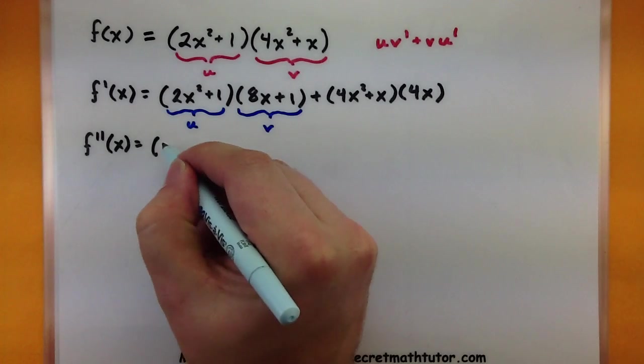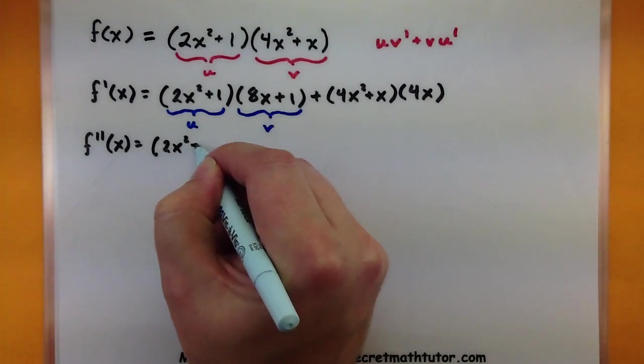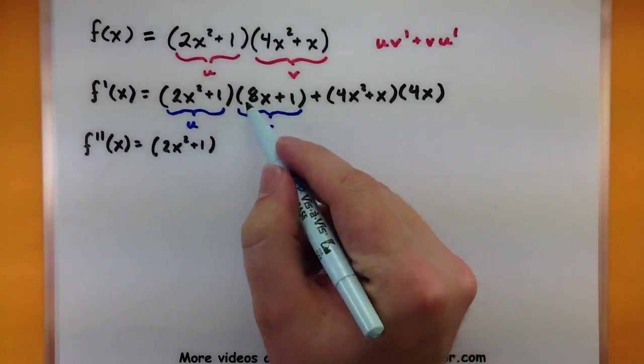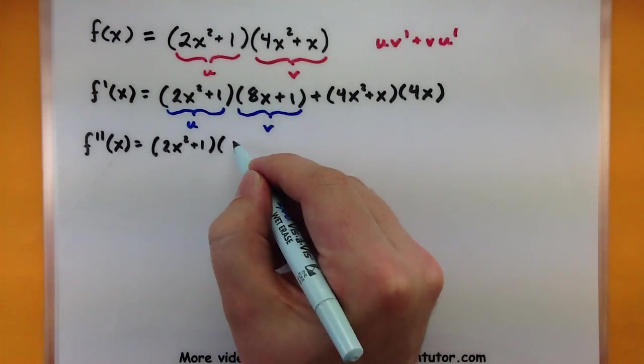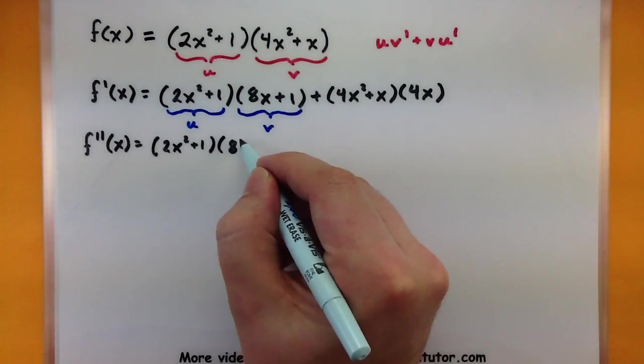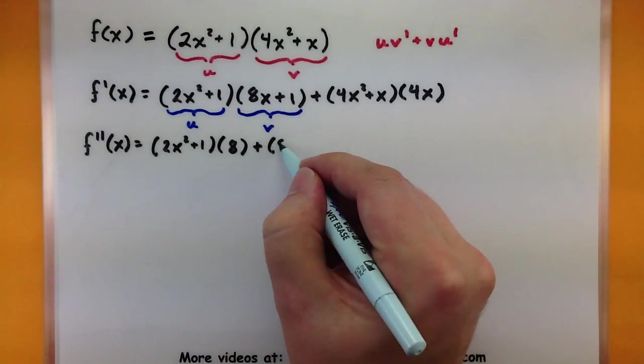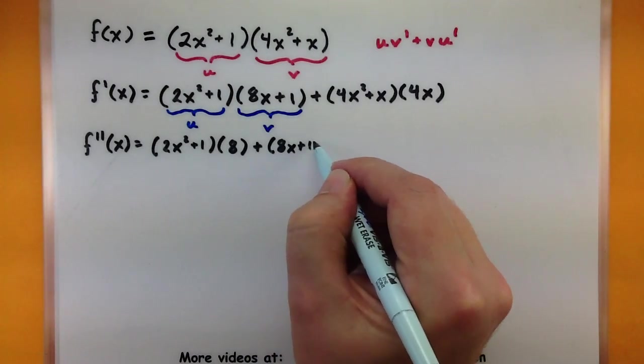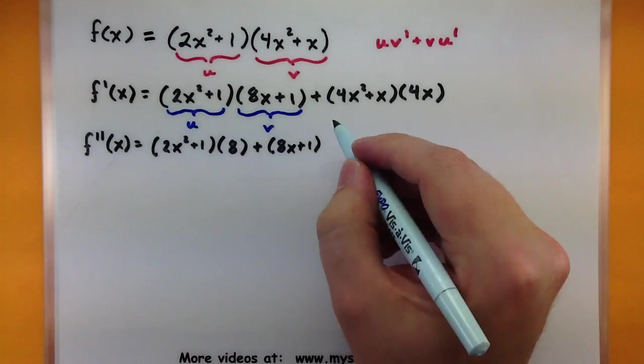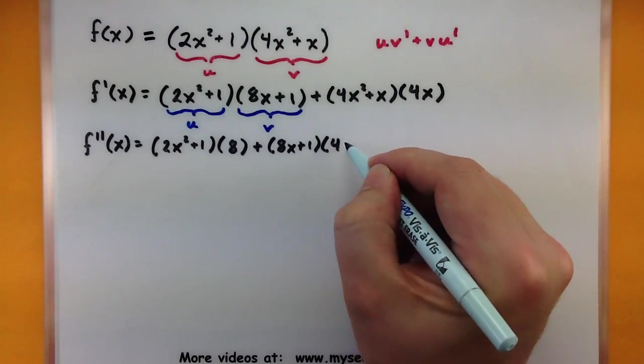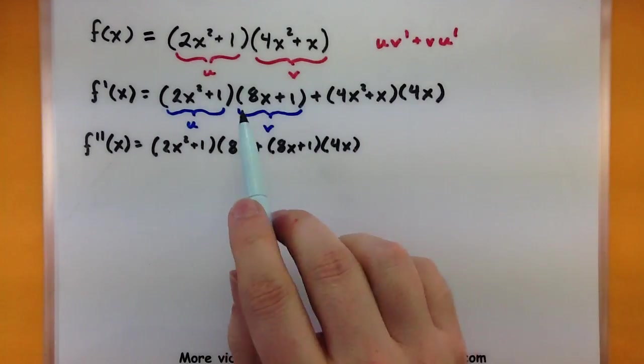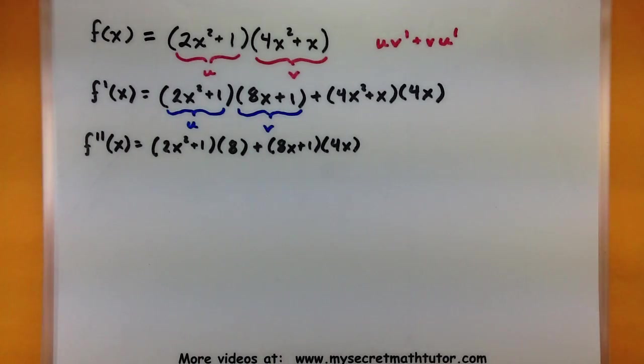So my first function, 2x squared plus 1. Derivative of the second. That would simply be just an 8 plus. Now I have my second function. Times the derivative of the first, 4x. So that takes care of derivative of those two pieces.